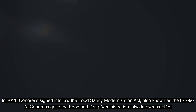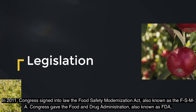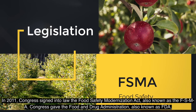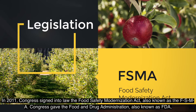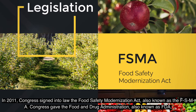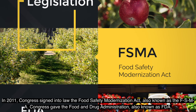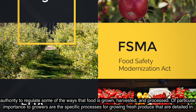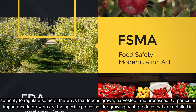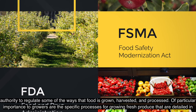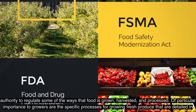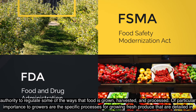In 2011, Congress signed into law the Food Safety Modernization Act, also known as FSMA. Congress gave the Food and Drug Administration (FDA) authority to regulate some of the ways that food is grown, harvested, and processed. Of particular importance to growers are the specific processes for growing fresh produce that are detailed in FSMA.